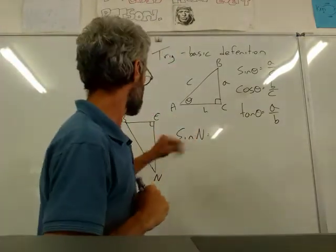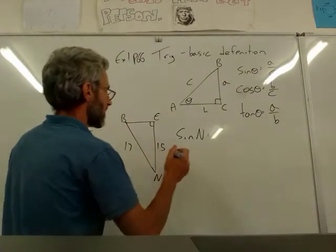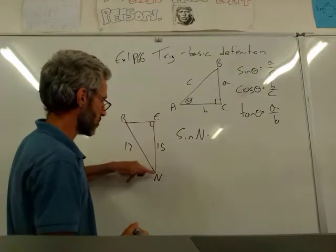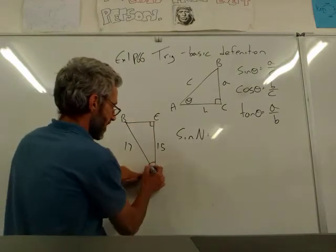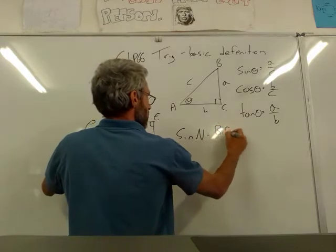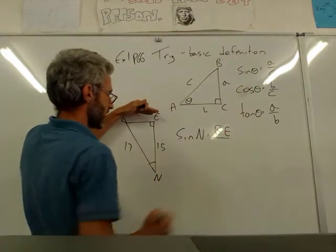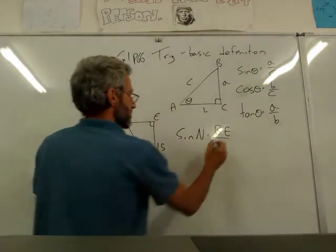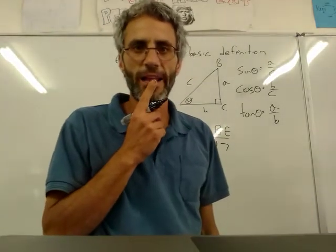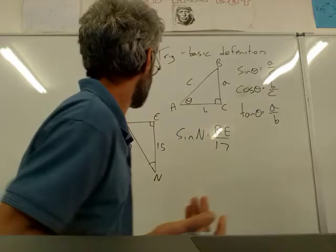And I want me to find out sine N. Now what is sine N? Sine N is going to be the side opposite to N. This is N. This is the angle N. So it's going to be BE opposite divided by hypotenuse, which is the 17. That's awesome. But I don't know what BE is. How do I calculate BE? Any idea? I don't know what BE is. I've got BE and BN.